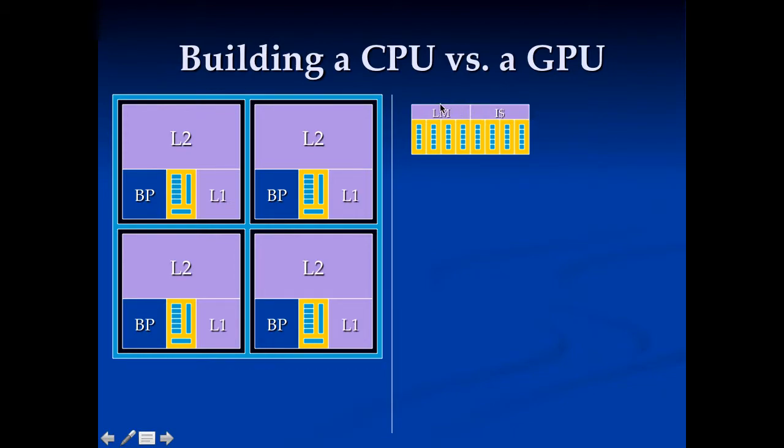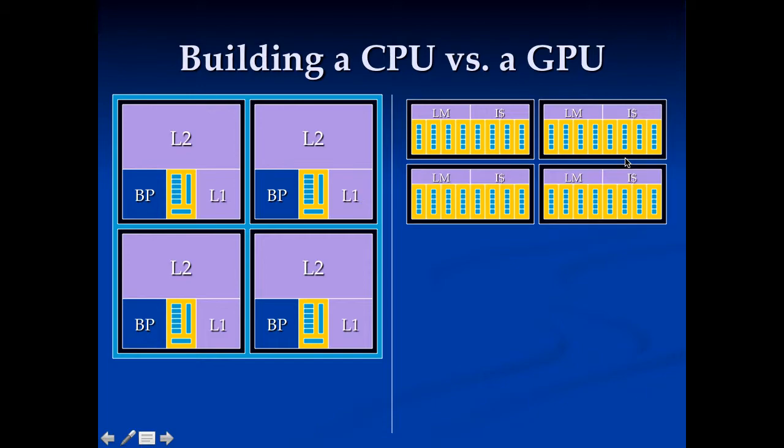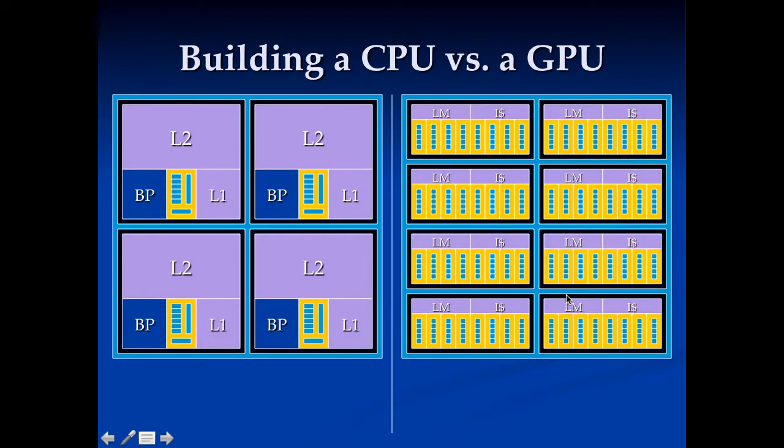We're going to add an instruction cache to this and some sort of local memory. We'll package this up and call it a streaming multiprocessor, if we happen to be working at NVIDIA. Put a bunch of these things down on the chip, package this up, and we'll call it a GPU.